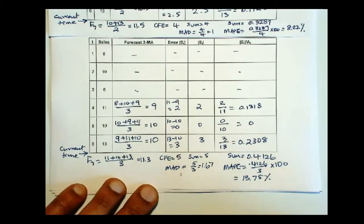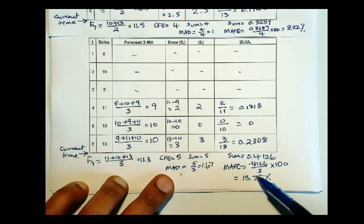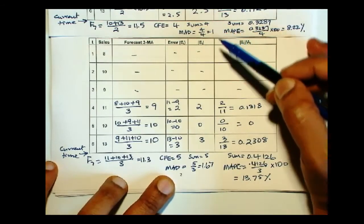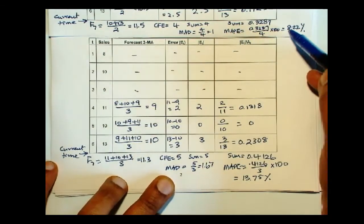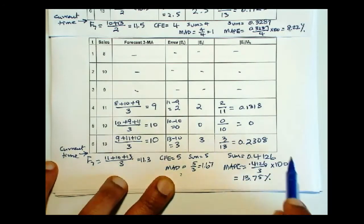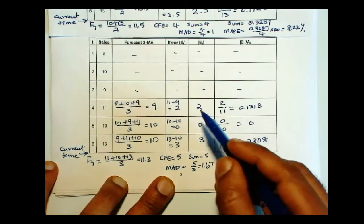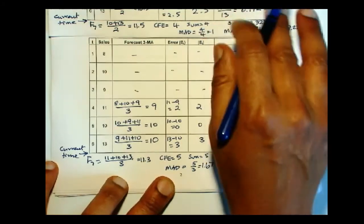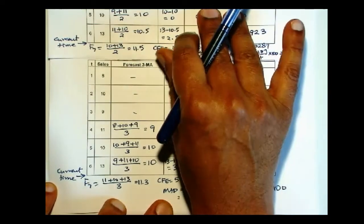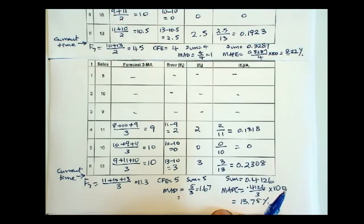So when you compare the MAD and MAPE of the 3 period moving average with that of the 2 period moving average, you see that the MAD has gone up, so has MAPE. So the error measures are greater for MA3. So moving average of 2 periods is a more accurate forecast at this point.